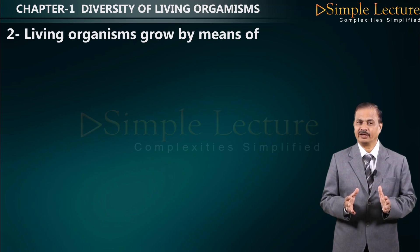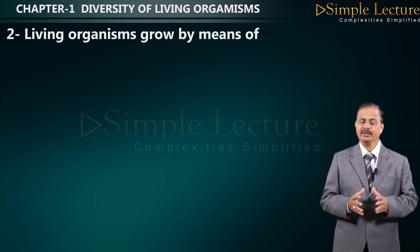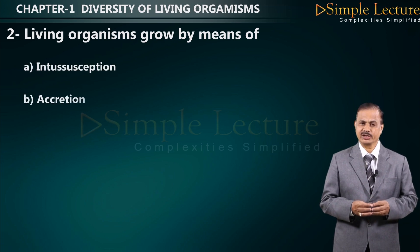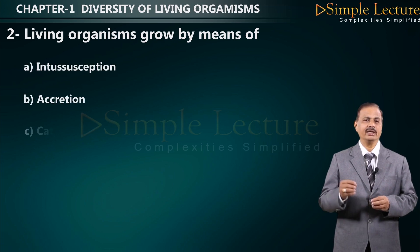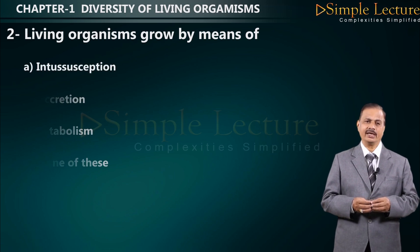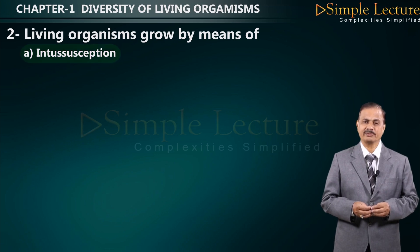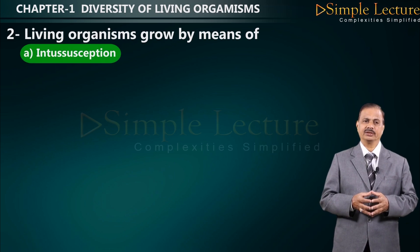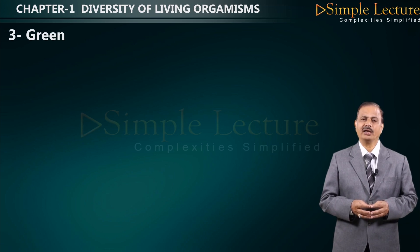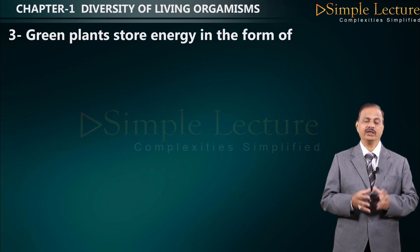Question number two: living organisms grow by means of what kind of growth? Options are A: intussusception, B: accretion, C: catabolism, D: none of these. The correct answer is A — it is called intussusception type of growth.